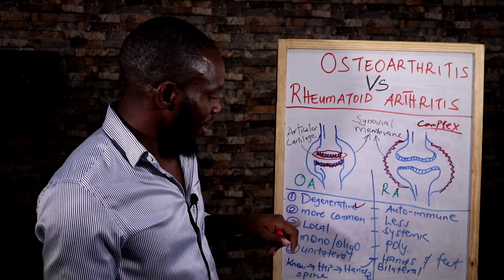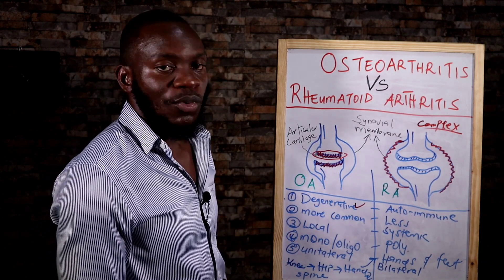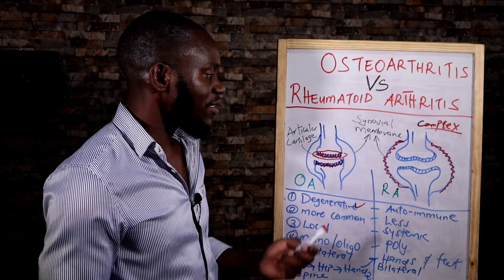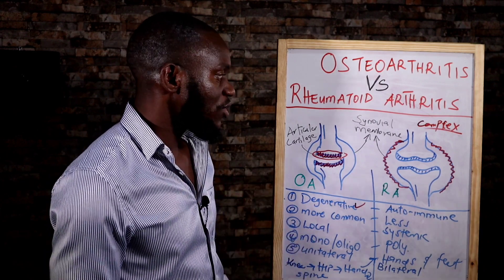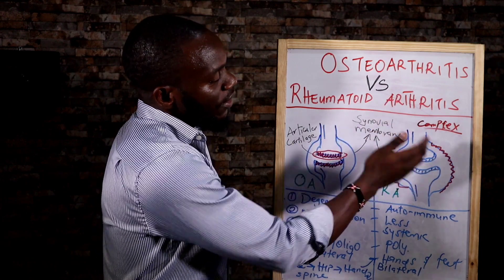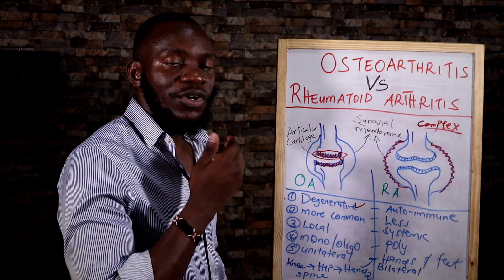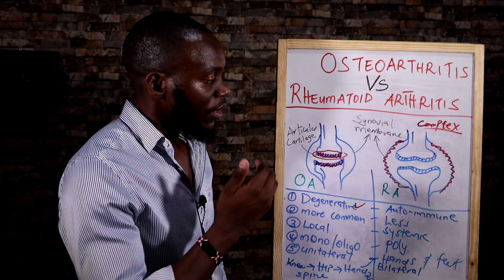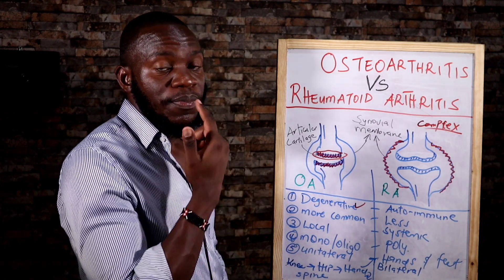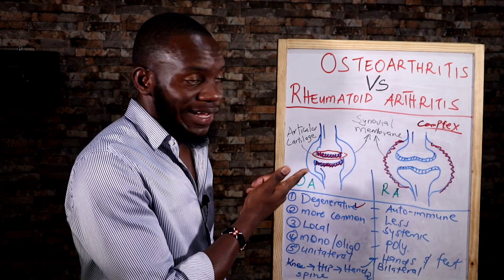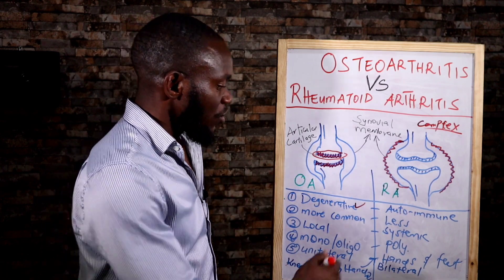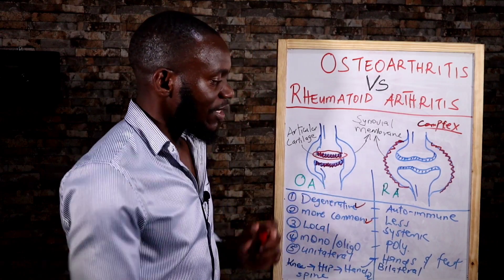Osteoarthritis is more common because it happens everywhere — people with injuries, trauma, accidents, injuries from football, rugby, and so on. Rheumatoid arthritis must occur as a result of an autoimmune condition. Autoimmune conditions occur as a result of poor diet. So osteoarthritis is more common and rheumatoid arthritis is less common.